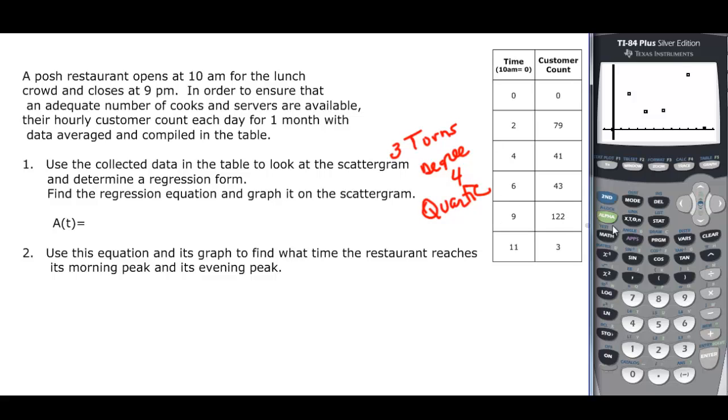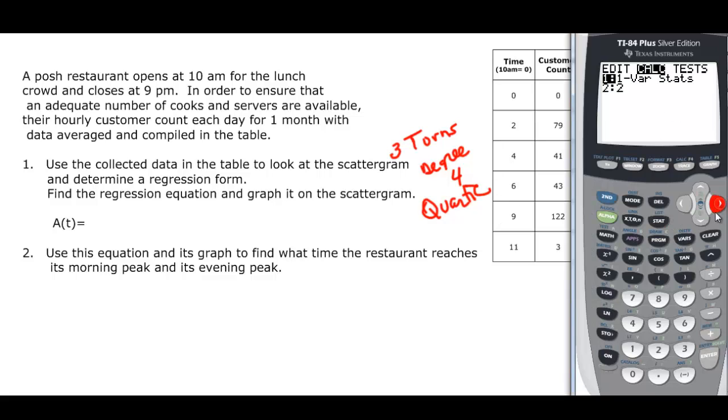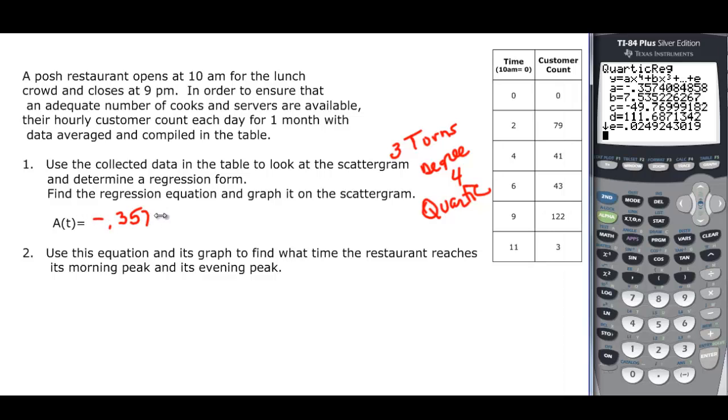A cubic is degree three and a quartic is degree four. Go back over to stat and calculate and then quart reg down here is seven, and you find out you get this wonderful equation that I have plugged in. I'll write it for you here: it's negative 0.357 t to the fourth plus 7.535 t cubed minus 49.77 t squared plus 111.687 t plus 0.025 when we round. So we found a quartic.